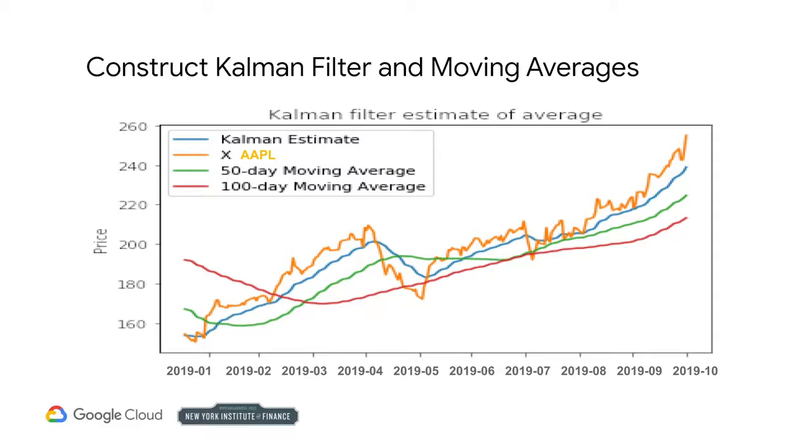We do open ourselves up to overfitting with some of the initialization parameters for the filter, but those are slightly easier to objectively define. There's no free lunch and we can't eliminate overfitting, but a Kalman filter is more rigorous than a moving average and generally more effective.